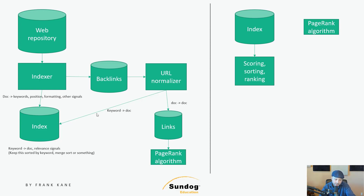If the forward index isn't already sorted by keyword, we'll probably want to do that now so we can more quickly figure out how to rank each document the keyword appeared in. Actually, if we're using Spark, it might figure out how to optimize that on its own. We'll have some sort of ranking stage that takes each keyword, the measure of that keyword's relevance within each document, and the document's PageRank score to come up with a final ranking. You can imagine even more features being fed into the ranking — this is where the term 'learning to rank' came from, so potentially deep learning could be employed to combine PageRank and features from the documents themselves to produce the best rankings.